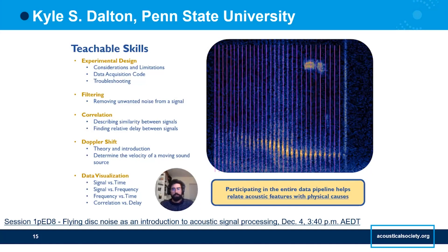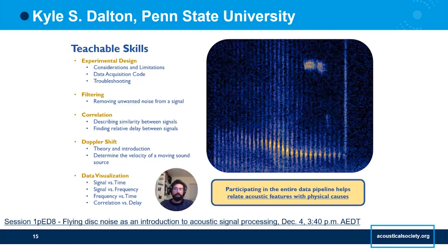For example, these vertical features occur each time the whistle spins around the leading edge of the disc. And by counting these features, we can determine the disc's forward velocity and rotational velocity. And I hope that because the student was actively involved in throwing and recording the disc, they have a better intuition of what these features are when they look at the spectrogram.